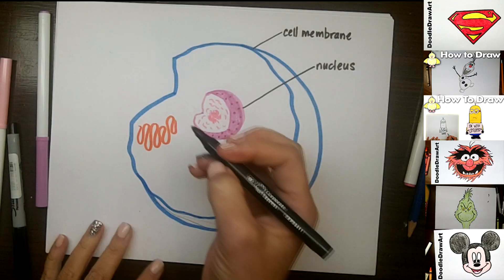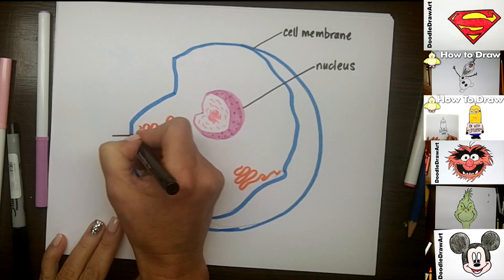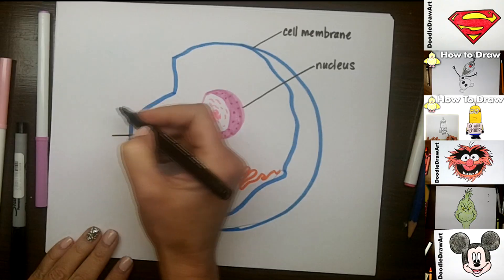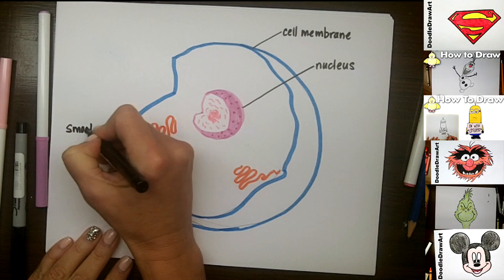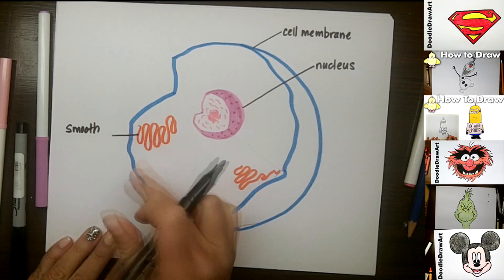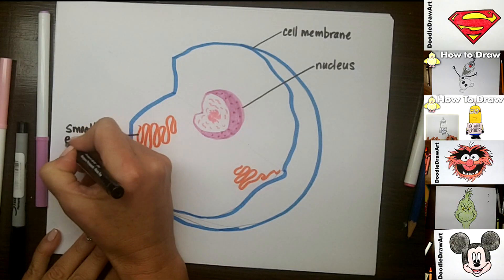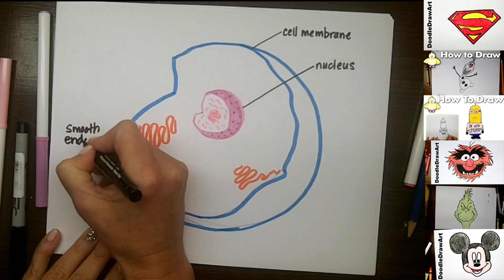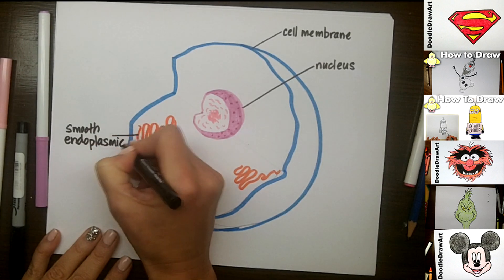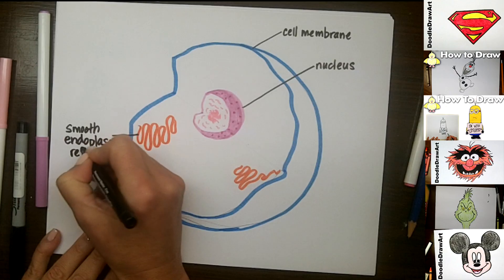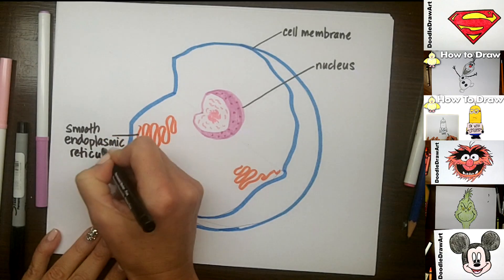And I will just draw a label over here. So when you're labeling something, it's a good idea to try and keep your lines direct, going from your words to the thing that you're labeling. And also print clearly. Endoplasmic reticulum. Great.